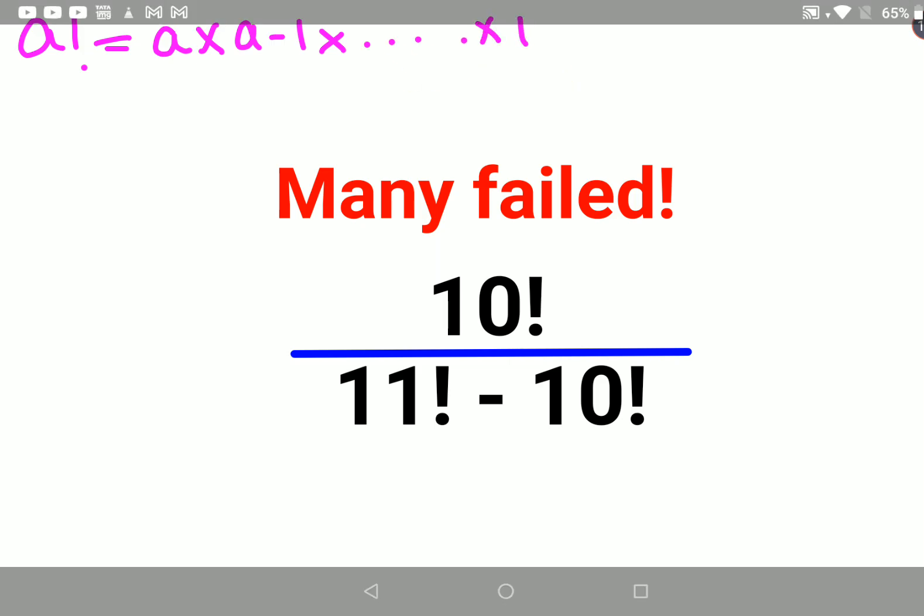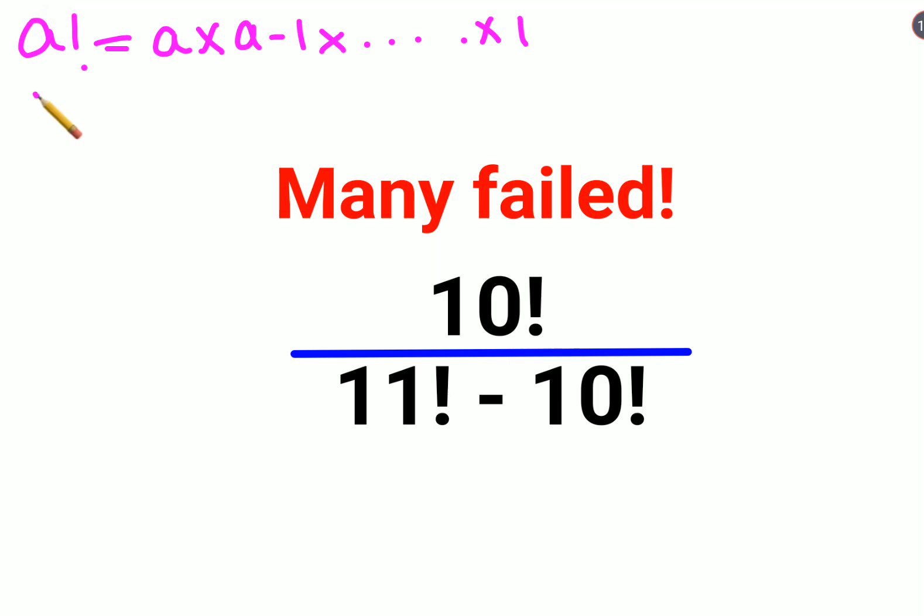So I can say 1 factorial will be 1 into 1 that is 1, 2 factorial will be 2 into 1 which is 2, 3 factorial will be 3 into 2 into 1 that gets you 6.